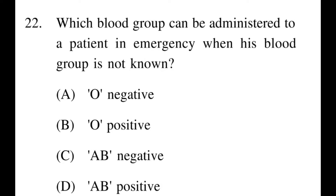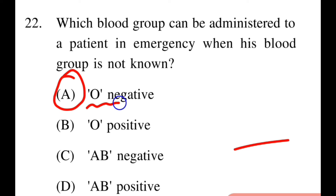Next question: Which blood group can be administered to a patient in an emergency when their blood group is not known? Options: A: O negative, B: O positive, C: AB negative, D: AB positive. The right answer is A, O negative. O negative blood can be transfused in such emergency situations for life-saving purposes.